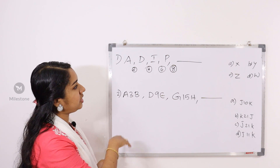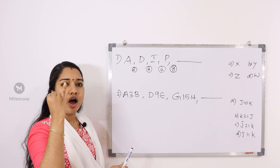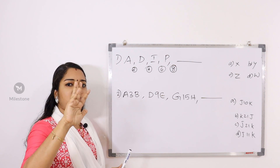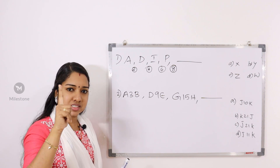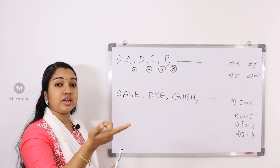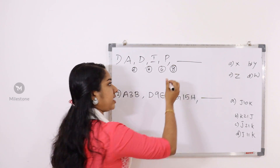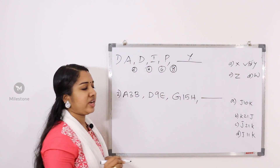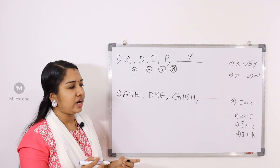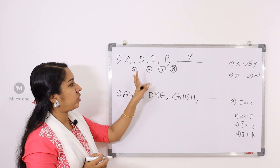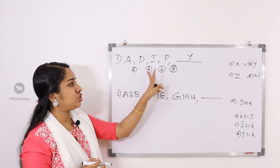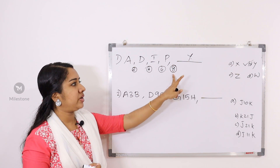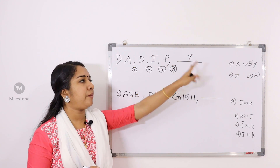The series goes Q, R, S, T, U, V, W, X — the gap is 2. Option B is Y. We have to fill out even numbers. That's why we fill out even numbers, and the answer is Y.